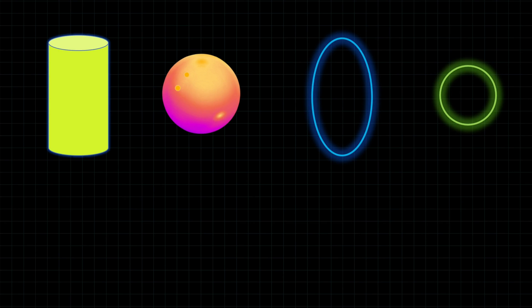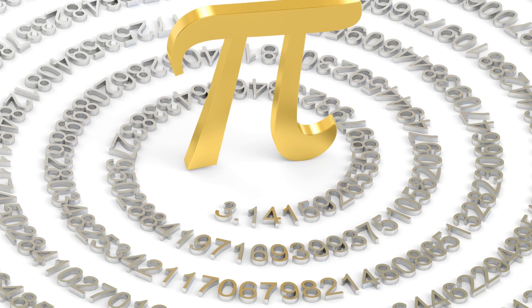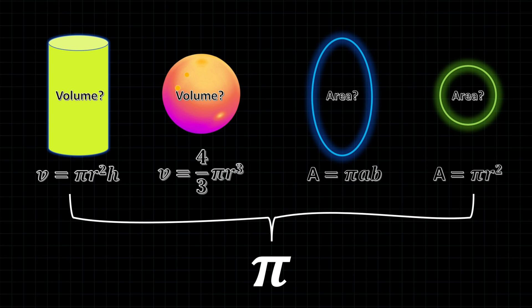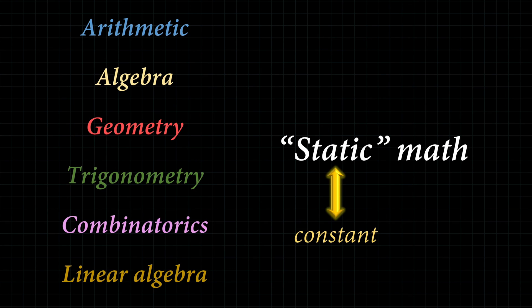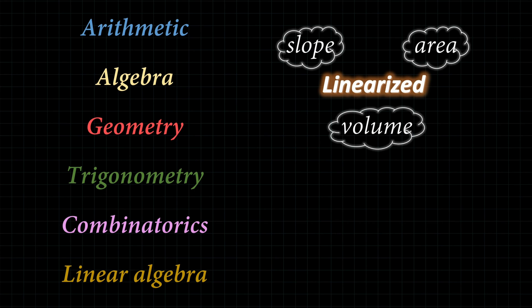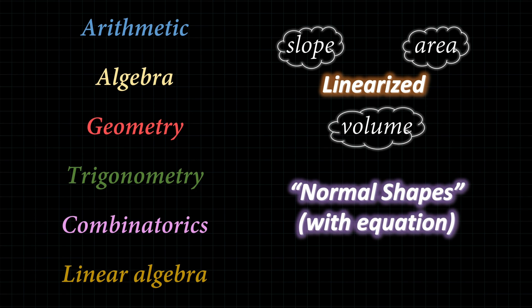What about these shapes — can you find the volumes and areas of these shapes? Again, the answer is yes, thanks to the magic number we refer to as pi. Thanks to pi, we have actual equations and formulas available to calculate the volumes and areas of these round shapes. So essentially, static constant math revolves around linearized information when it comes to finding slopes, areas, and volumes, and to find volumes and areas of non-linear shapes, they would have to be normal or regular shapes with existing equations.